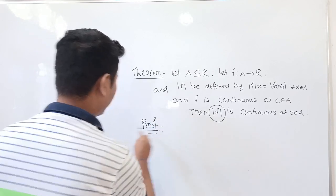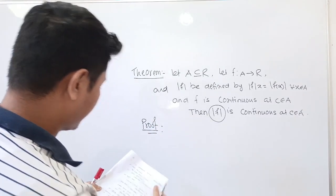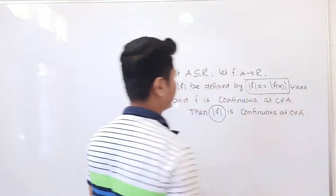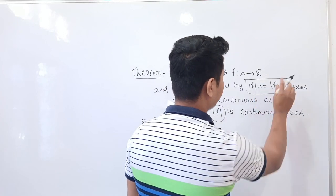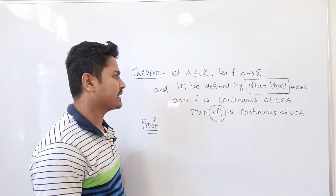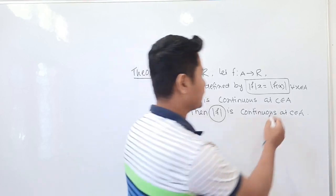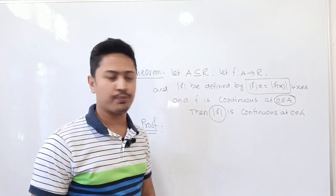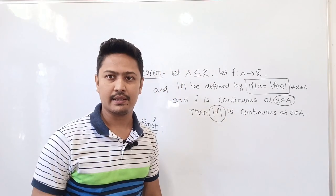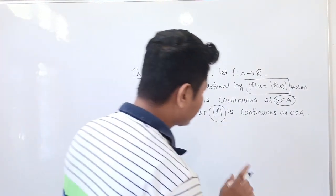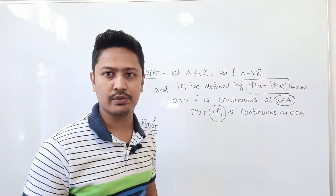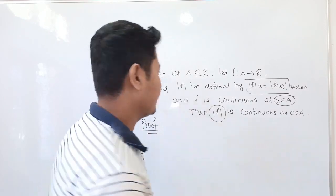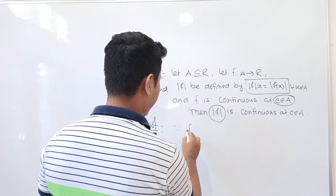Now let us prove. We observe that mod of f into x equals mod of f of x. The given information is that f is continuous at the point c which belongs to A. By using this information, we are going to prove that mod of f is also continuous at c belonging to A.